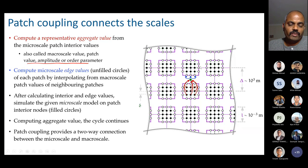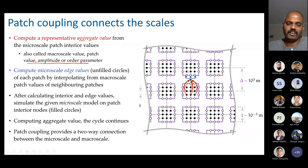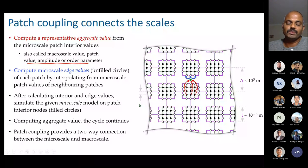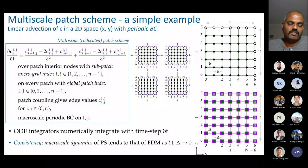Using these macro scale values we interpolate to find the edge values. With interior and edge values we can evaluate the evolution equations and integrate them — the cycle continues. The patch coupling provides two-way coupling: from macro scale values it carries information to the micro scale nodes, and by computing aggregate values from patch interior values it passes information from micro scale back to macro scale. That is how patch coupling works.